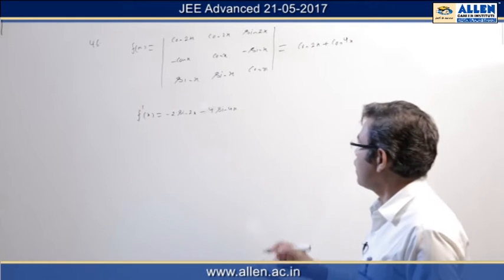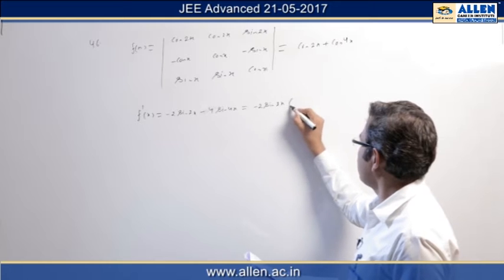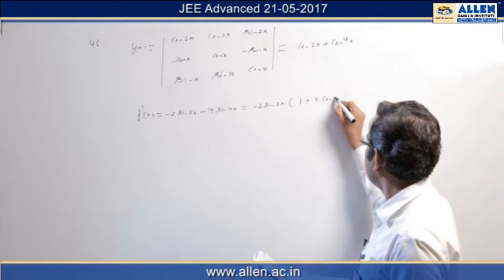Now if we take common minus 2 sin 2x, within bracket I will get 1 plus 4 cos 2x.